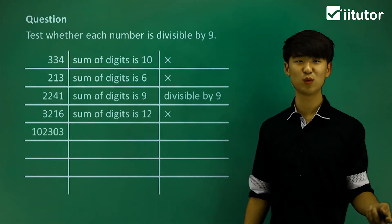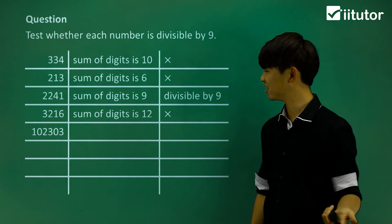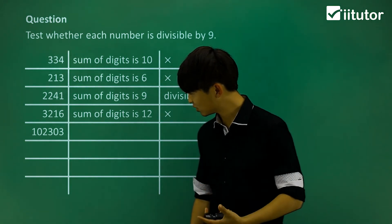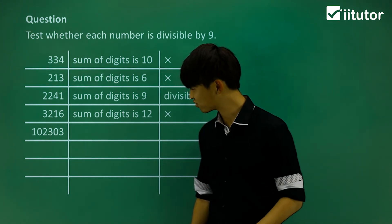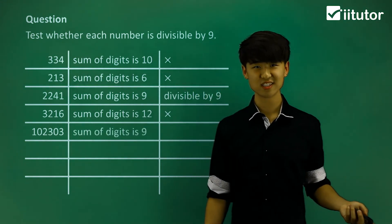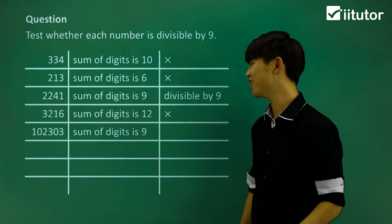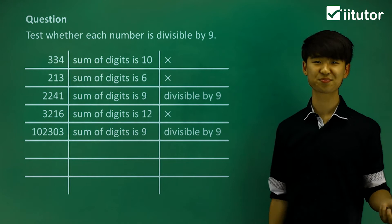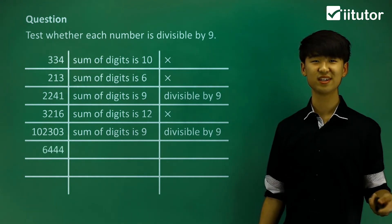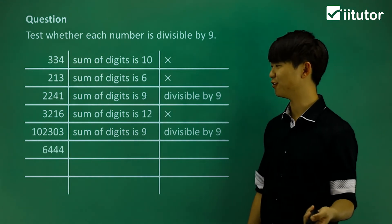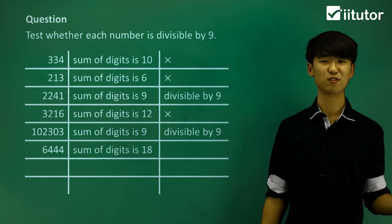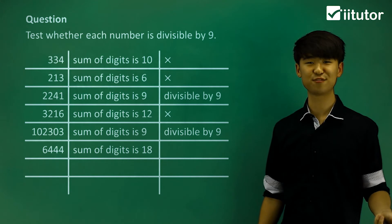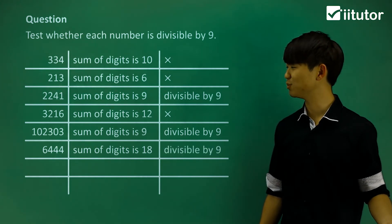Now the number is getting bigger: 102303. If we look at the sum of the digits, 1 plus 0 plus 2 plus 3 plus 0 plus 3 gives me a sum of digits equal to 9. And that's divisible by 9, so that means this long number is also divisible by 9. Now 6444: the sum of digits is 18, and that is divisible by 9, so 6444 is divisible by 9.